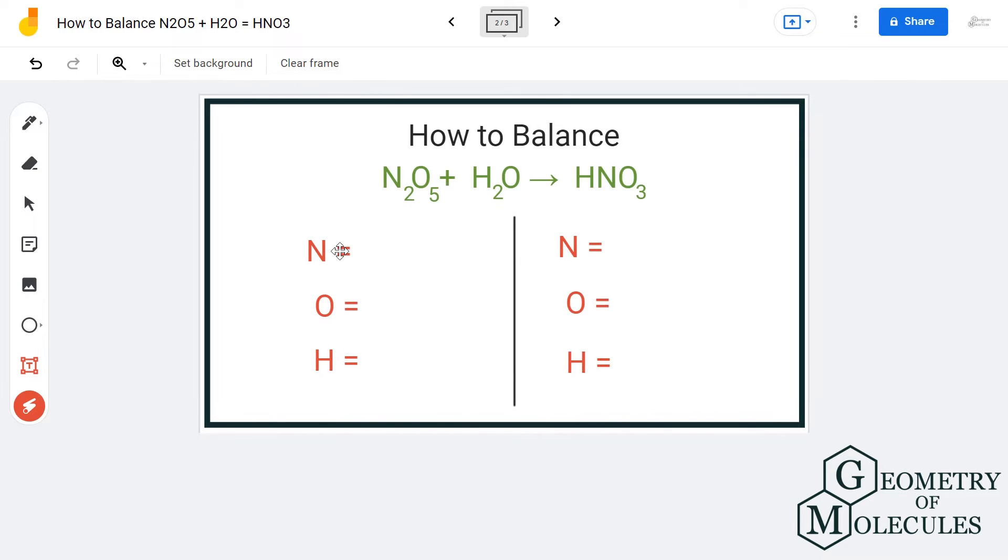To balance this equation, we will first count the number of atoms on both reactant and product sides. On the reactant side, we have two nitrogen atoms. For oxygen atoms, we have five plus one—do not forget about this oxygen atom which is present in the H2O molecule.